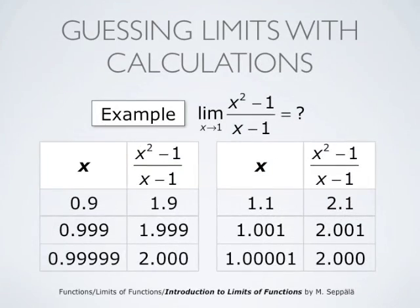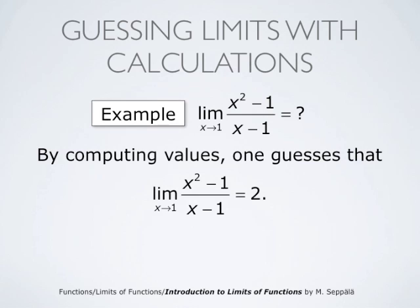If it is not always a good idea to compute the value of the function at the limit point, it may be a good idea to compute a table of values near the limit point. In this example, we look at the expression x squared minus 1 divided by x minus 1. When x equals 0.9, the value is 1.9; when x equals 0.999, the value is 1.999; and when x equals 0.99999, the value rounds to 2.000. Likewise, when x equals 1.001, the value is 2.001, and when x equals 1.00001, the value is also 2.001. This table leads us to guess that the actual limit of this function is 2.